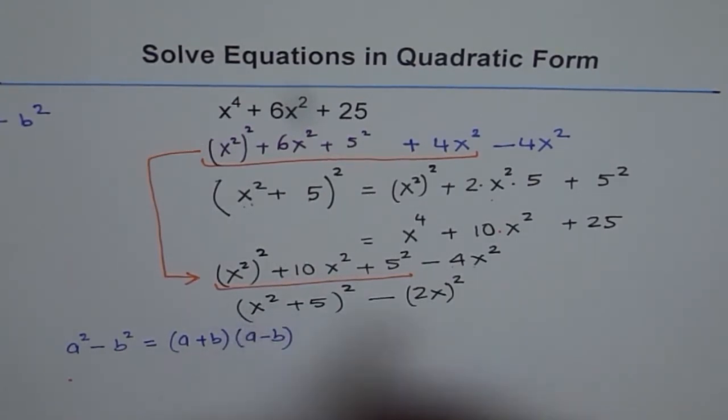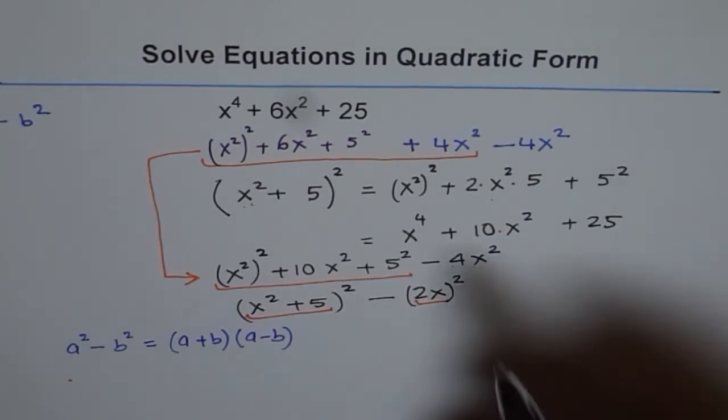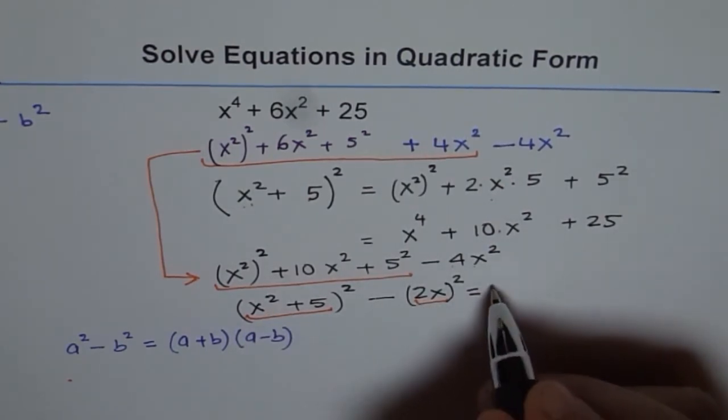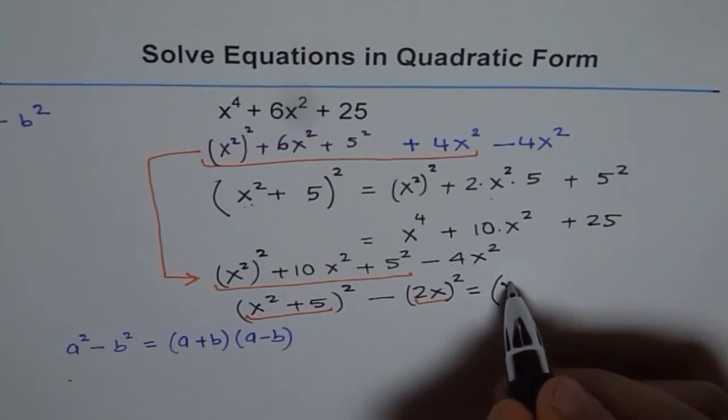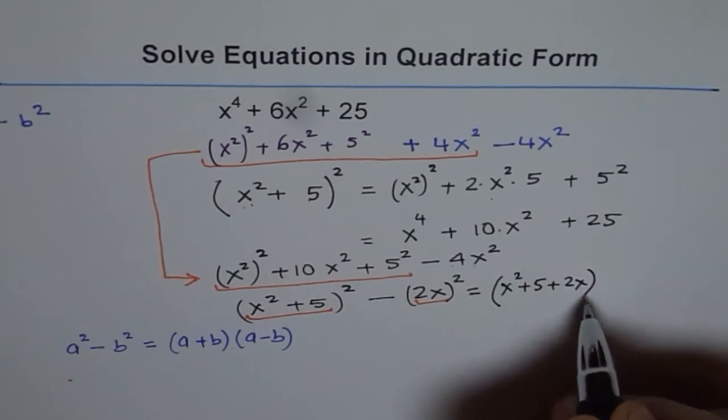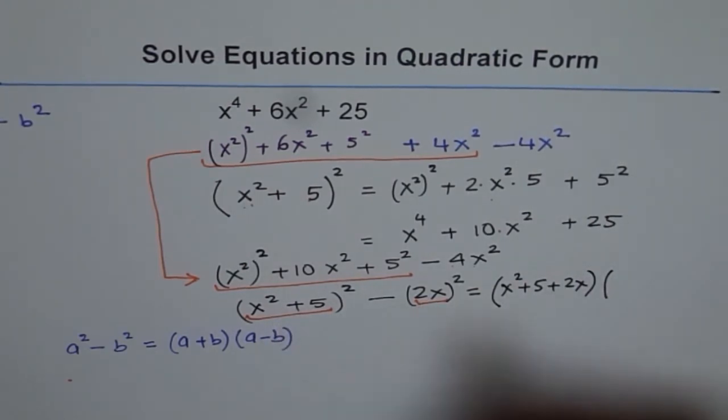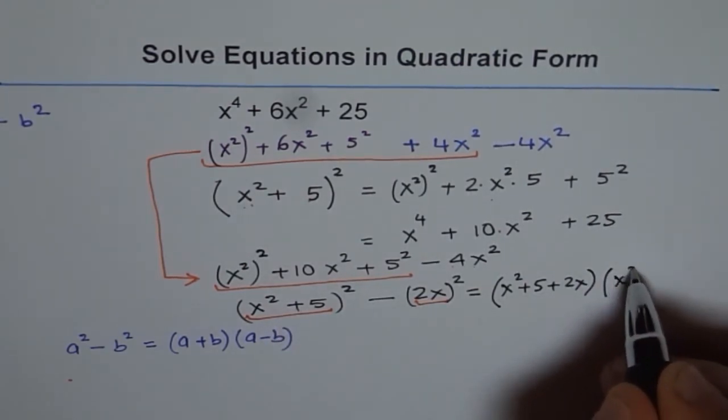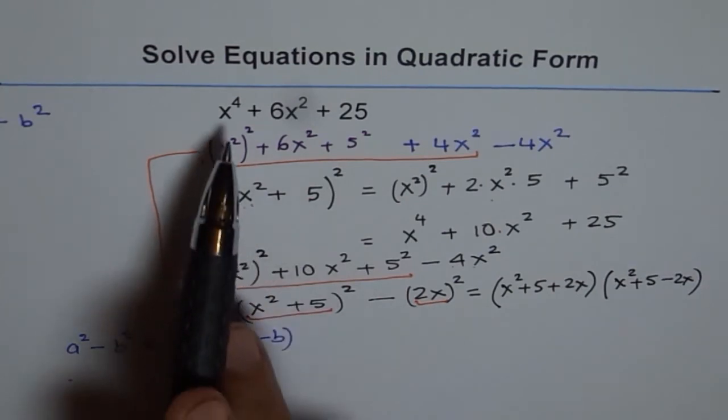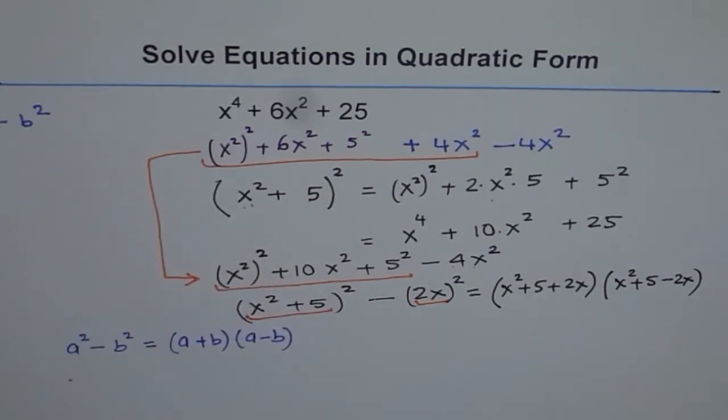And what is a for us? a for us is x^2 + 5. This is a for us. And what is b for us? b is 2x. Do you see that? And therefore, I can factor it now as (a + b), which is (x^2 + 5 + 2x) times (a - b), which is (x^2 + 5 - 2x). So that becomes the factored form of the given expression, right?